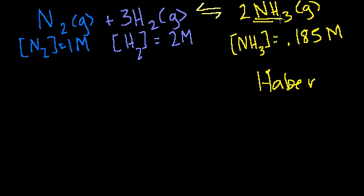The Haber process is how we get ammonia in the world and feed everyone. Ammonia is a very important fertilizer, but that's beside the point. The Haber process is in equilibrium, which doesn't mean the concentrations are the same. In fact, this is an equilibrium concentration I worked out before starting this video. The concentrations of nitrogen and hydrogen are very different from the concentration of ammonia. What equilibrium tells us is that once we get to these concentrations, the rate of reaction going rightward equals the rate going leftward.